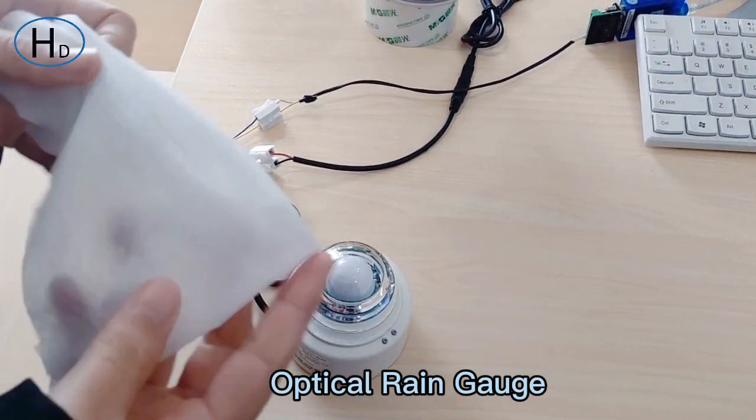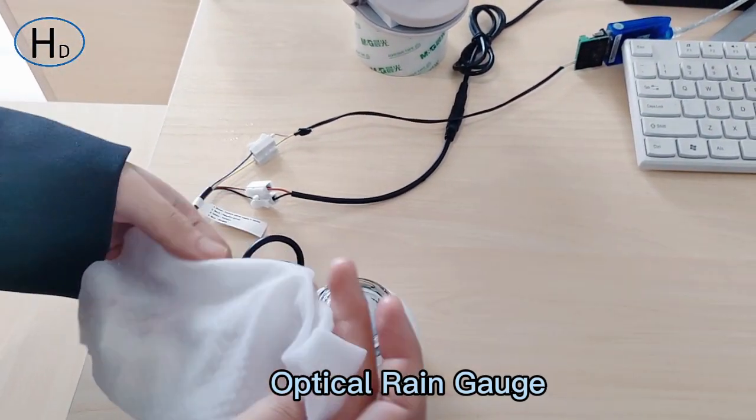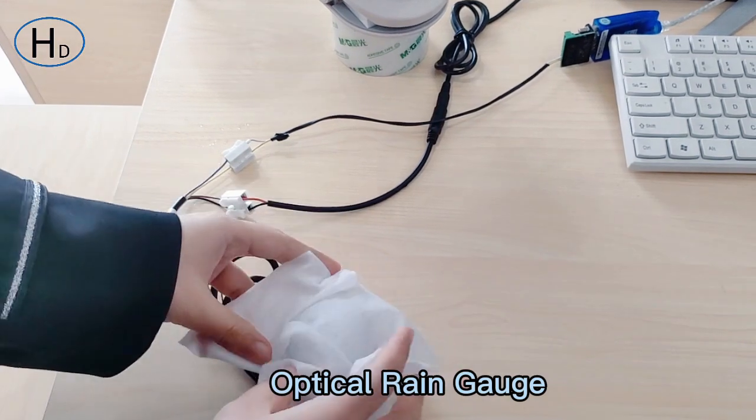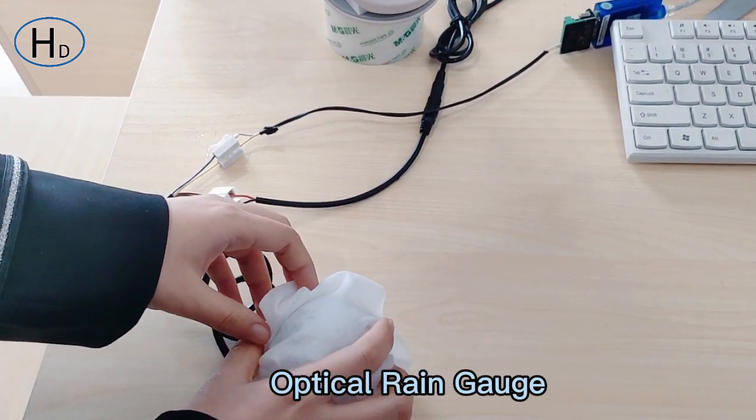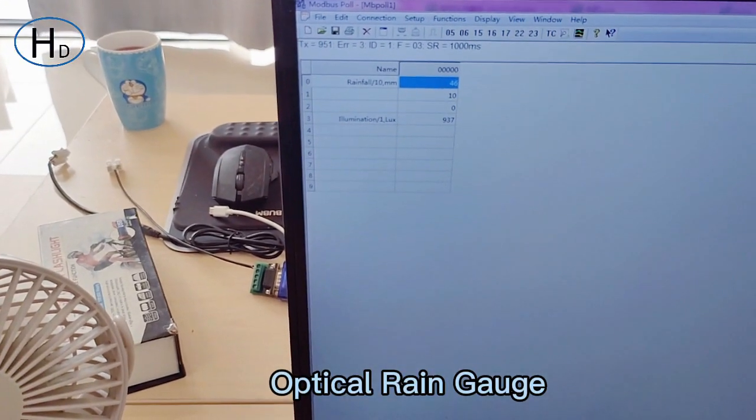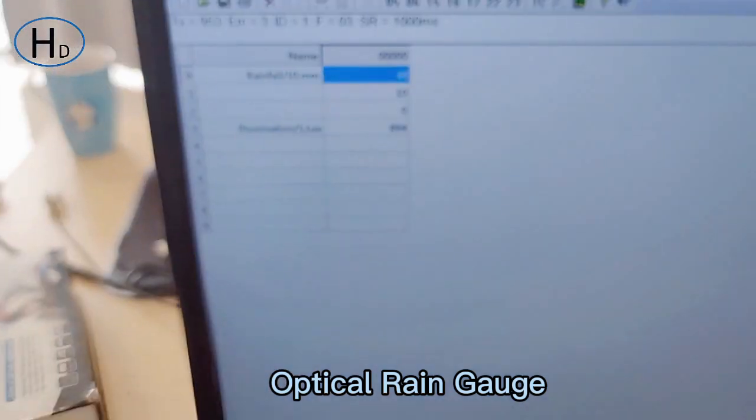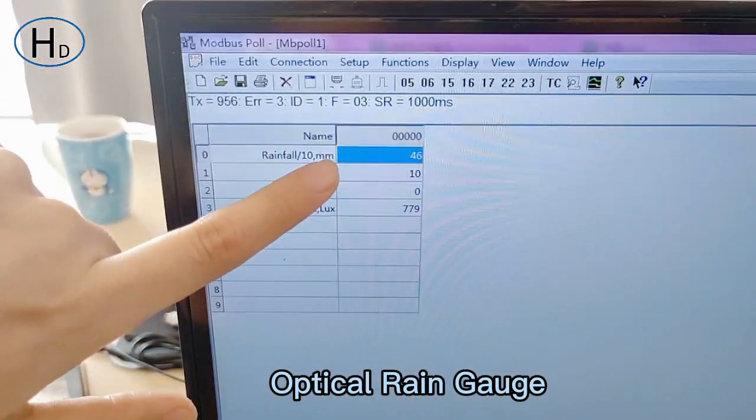First, we will do the test with the wet wipe to imitate rainfall. We can view the real-time data on the PC, and the rainfall is 4.6 mm.